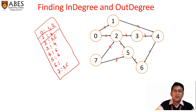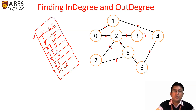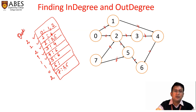If we look at the size of each adjacency list vector, the size of vertex zero's list is two, so the outdegree of vertex zero is two. The size of list one is one, so outdegree of one is one. For two it is two, three is one, four is one, five is one, six is zero, and seven is two. The size of each adjacency list directly represents the outdegree of that vertex.